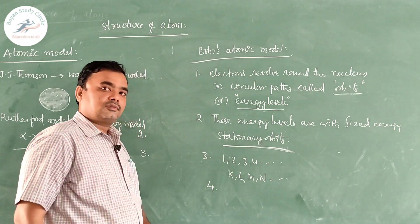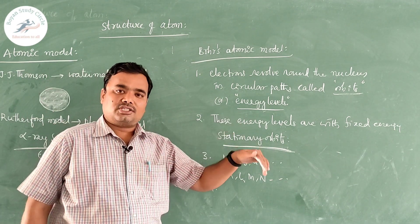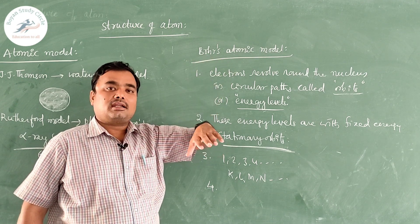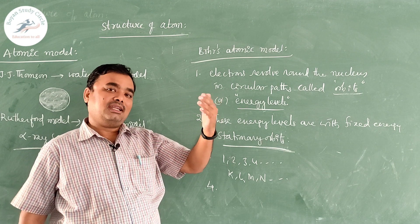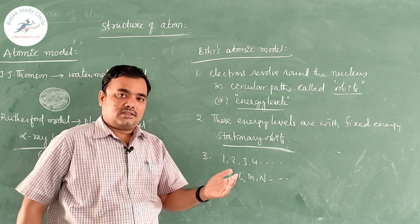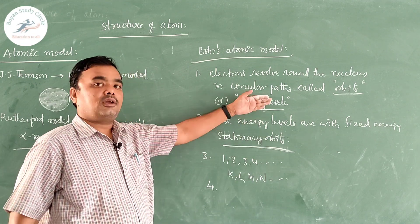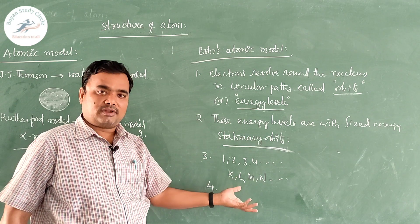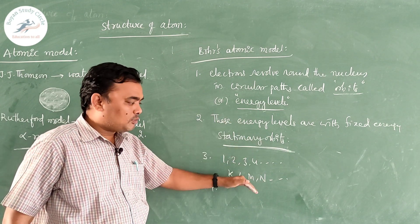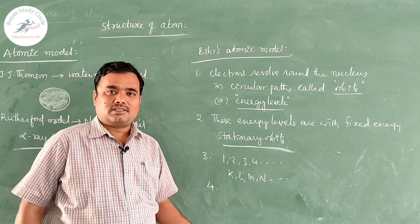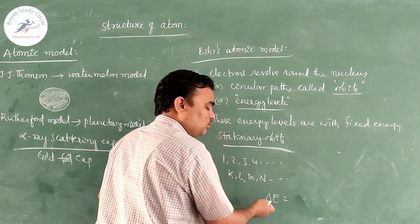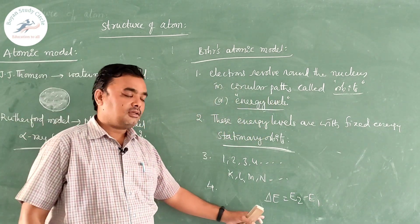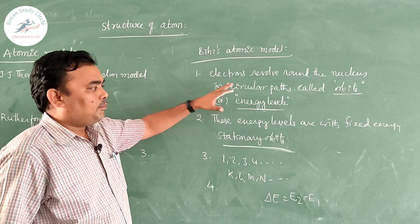When an electron in the atom gets energy, it gets excited to higher levels, and when coming back it loses energy and returns to the lower level. Excitation and de-excitation take place when the atom gets energy — excited from lower level to higher level, and de-excitation is coming back from higher level to lower level, meaning losing of energy. The amount of energy absorbed or lost is calculated with the equation: delta E equals E2 minus E1.